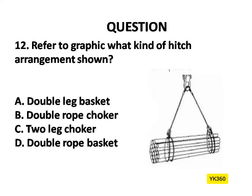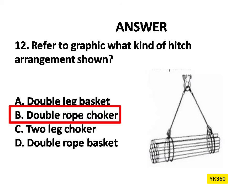Question Number 12. Refer to graphic — what kind of hitch arrangement is shown? Options are: A. Double leg basket, B. Double rope choker, C. Two leg choker, D. Double rope basket. The answer is Option B: Double rope choker.